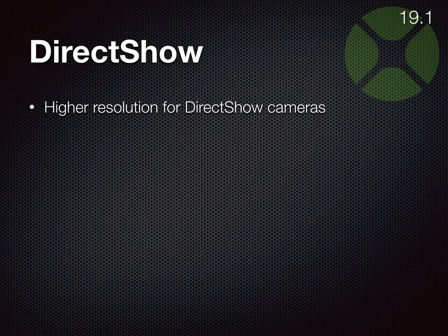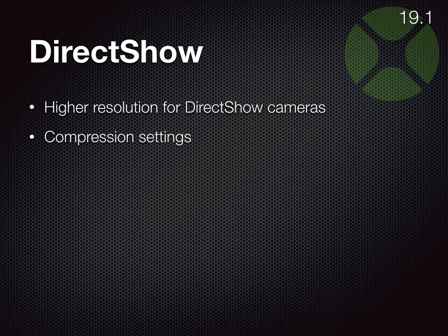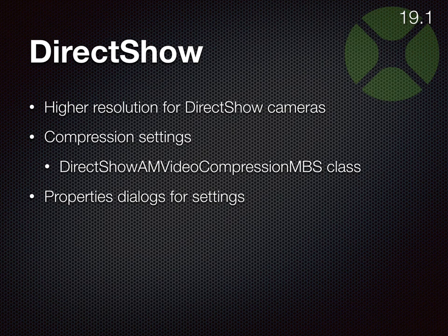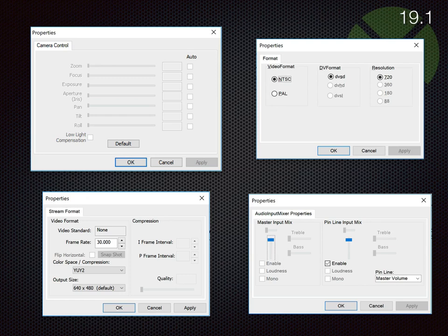We have DirectShow improvements. We increased the resolution — instead of the default small resolution, we now have a method to explicitly pick the highest available resolution on the camera. We got compression settings so you can pick which encoder is used to encode your video. Microsoft offers standard dialogs for all those properties, so you can pick settings for your camera, format, audio, mixer, and video storage. Depending on what your camera supports, those dialogs will be completely different.